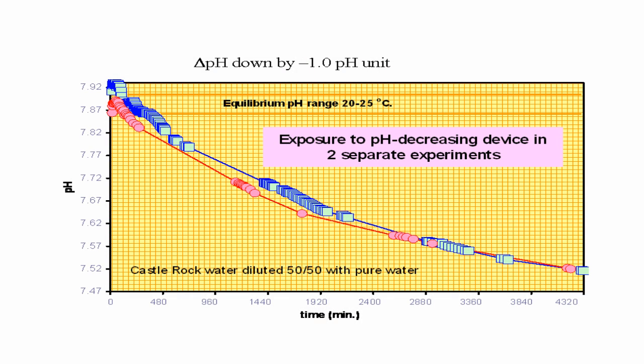The second experiment was to take water and decrease the pH of that water by one full pH unit with no chemical additions. Same measurement accuracy, water in equilibrium with air. This next figure shows the same kind of behavior: when you put the pH electrode in the water, it starts at a certain pH and very quickly adjusts its measurement value to that of the thermodynamic equilibrium for the uncoupled state of that particular water.